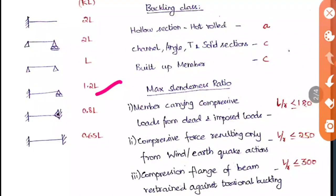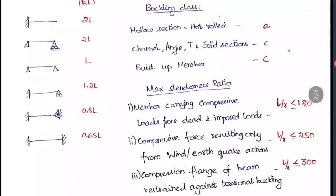For buckling class: hollow sections and hot-rolled sections are classified as Class A. For I and H sections, classification depends on dimensions. Channel sections, angle sections, T sections, and solid sections are Class C. Any built-up member is also Class C. A built-up member is one created by connecting two or three rolled sections together when standard rolled sections don't provide the required area.